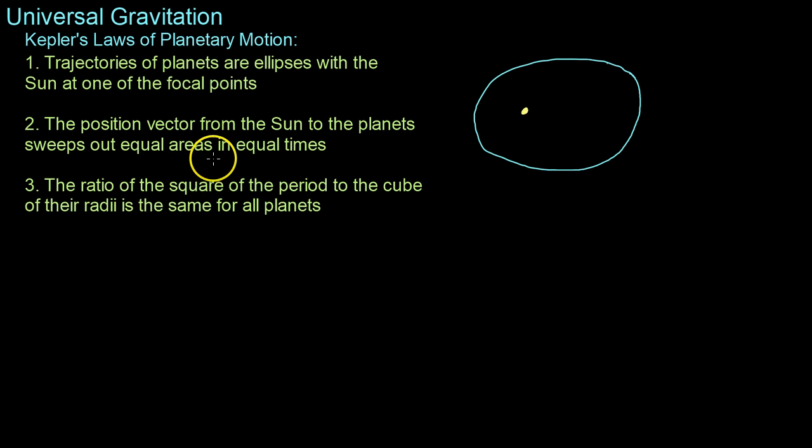The second one is a bit more complex, but it's a really cool law. It's that in equal times the position vector from the Sun to a planet, so that vector right there will sweep out equal areas. So if there's some time delta T here, then the position vector goes from point A to point B and sweeps out this area here.